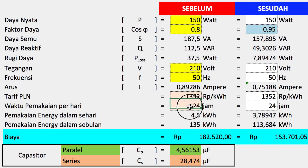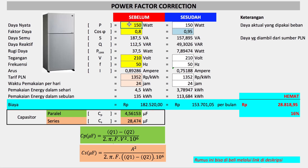Data yang perlu dimasukkan parameter lain adalah tarif PLN, untuk mengetahui berapa biaya yang akan dipakai dan berapa lama pemakaian alat perharinya. Sebagai contoh, misalkan sebuah kulkas, daya nyatanya 180, kondisi faktor dayanya berdasarkan alat ukur 0,8, kemudian tegangan kondisinya 215, dan frekuensinya 50 Hz, dengan target faktor daya 0,95, maka nilai kapasitornya menjadi 4,3 mikrofarad.